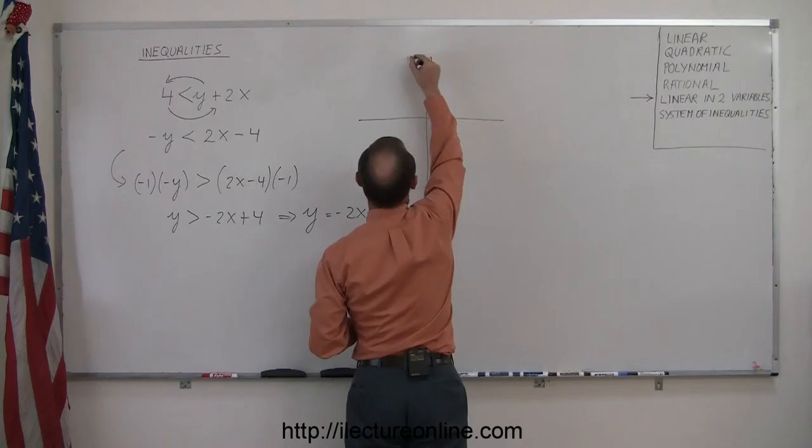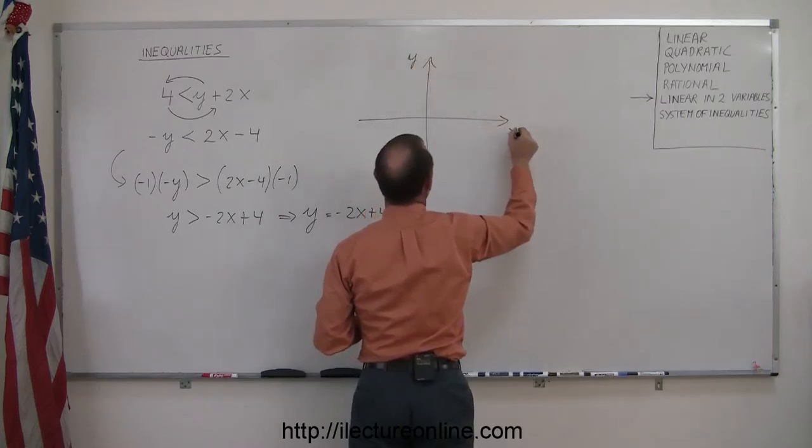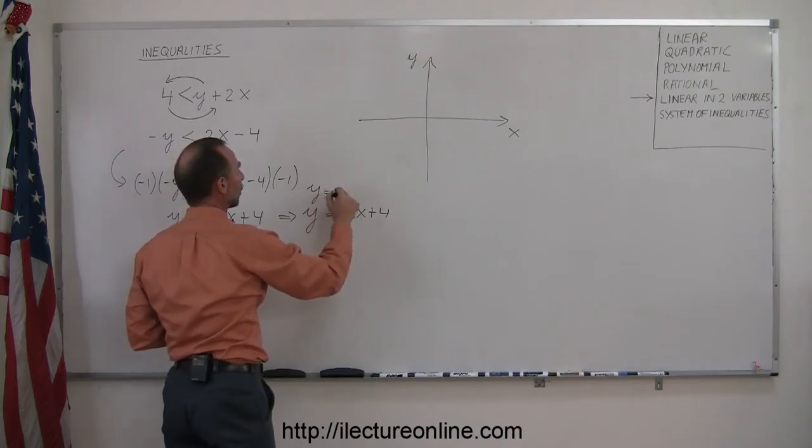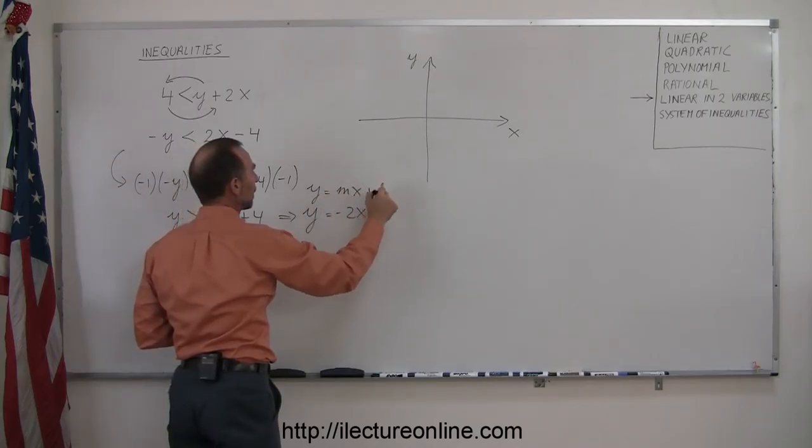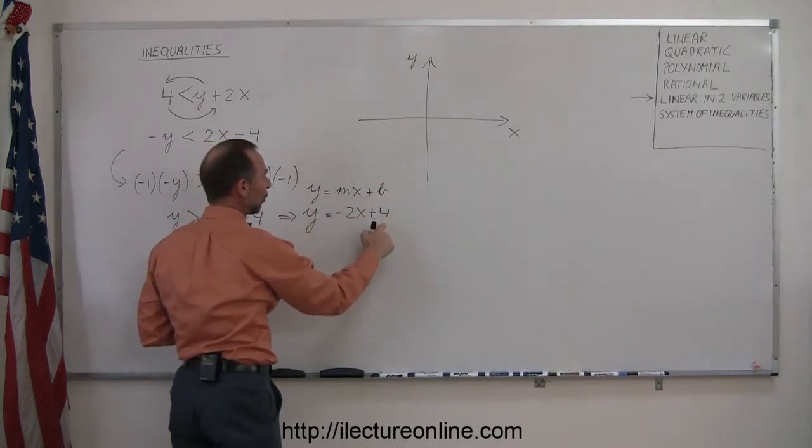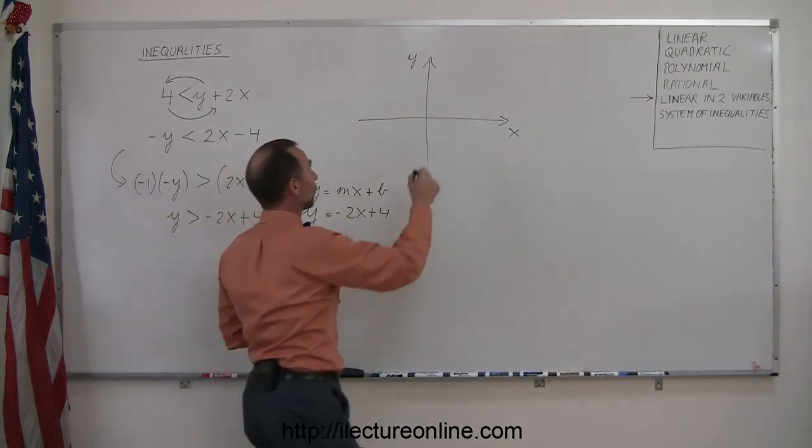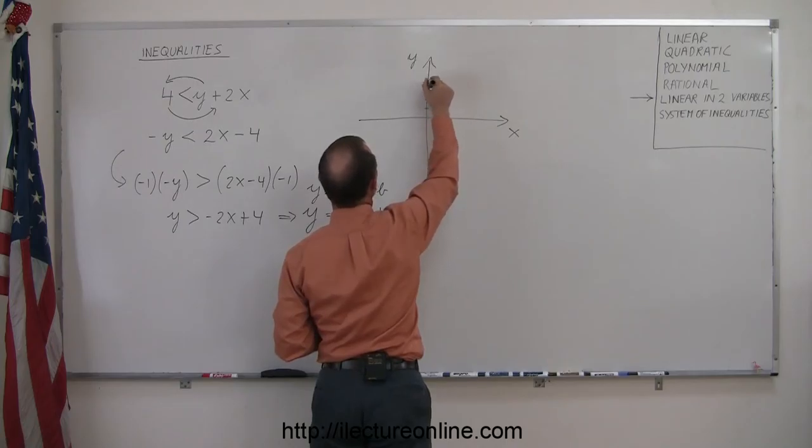So there's my y-axis, there's my x-axis. This looks just like a linear equation in the form y equals mx plus b, where b is the intercept, in this case 4, m is the slope, in this case a minus 2.